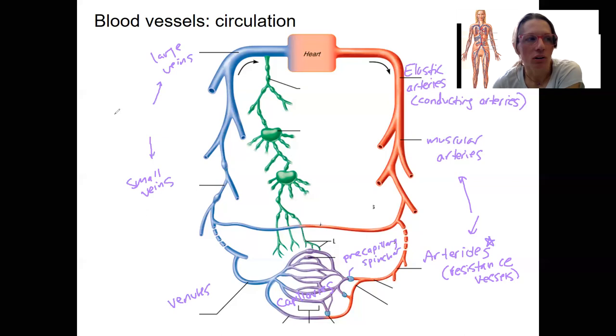These veins are also called capacitance vessels. They're really important for maintaining a large amount of blood. A lot of blood is in those vessels. They're reservoirs. We'll come back to that idea as well.